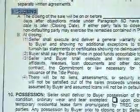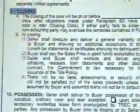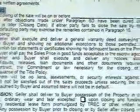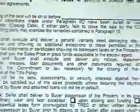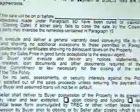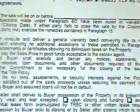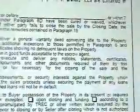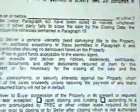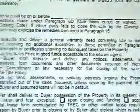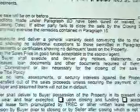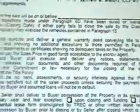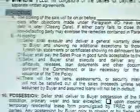Paragraph 9 is the closing date. In this section, you will need to put what date you would like the property to be closed on — on or before that particular date — or 7 days after the objections have been made in paragraph 6 that the buyer has objected to.